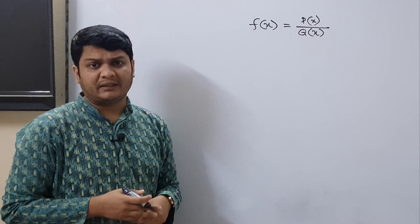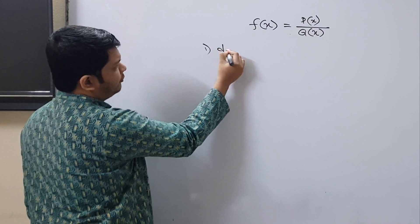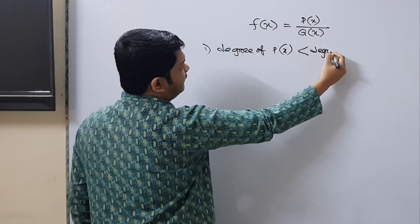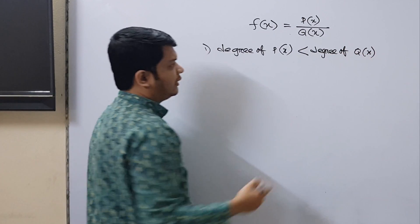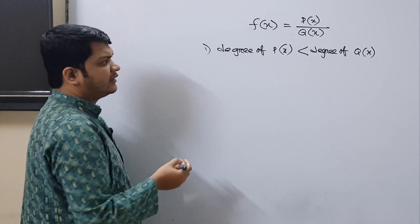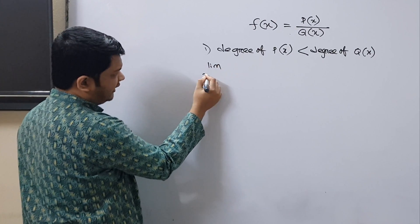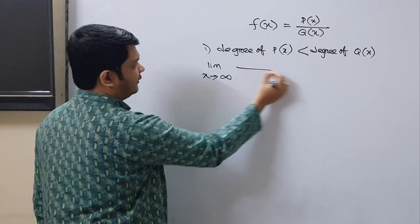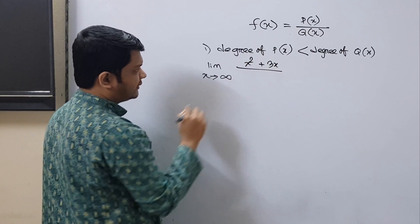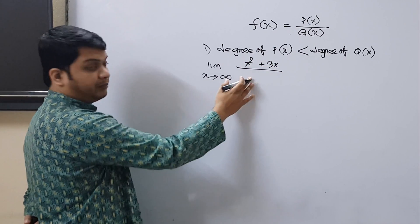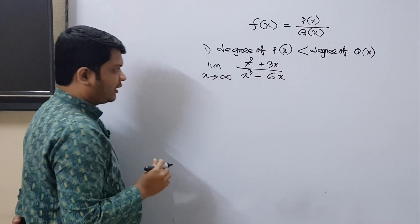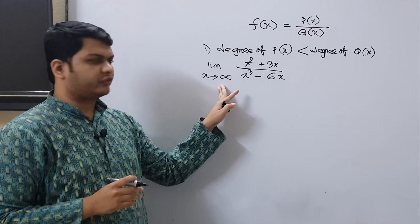Let's start with Case 1: where the degree of p is less than the degree of q. How can we calculate the limit to infinity in this case? Let's look at an example. Consider the limit as x tends to infinity of (x² + 2x) divided by (x³ - 6x). How can we solve this type of problem?